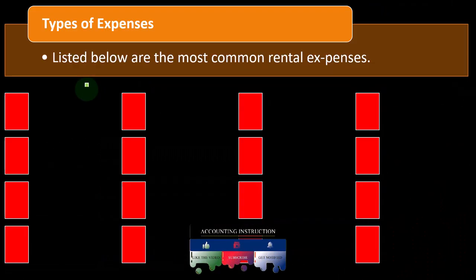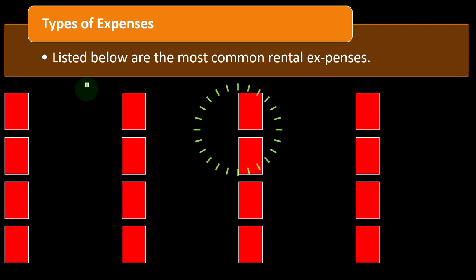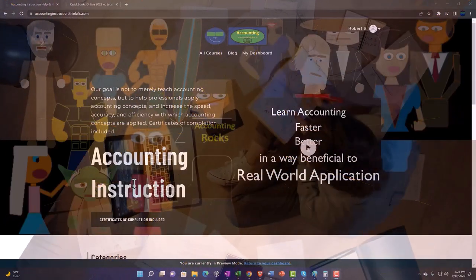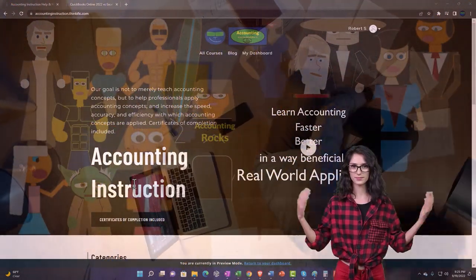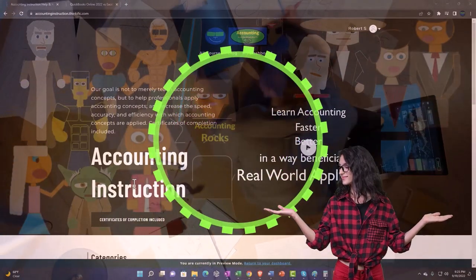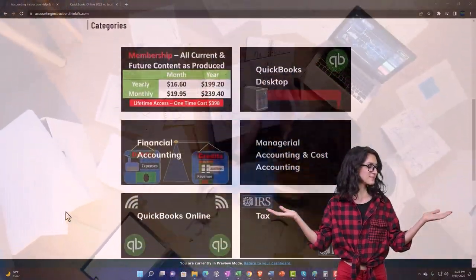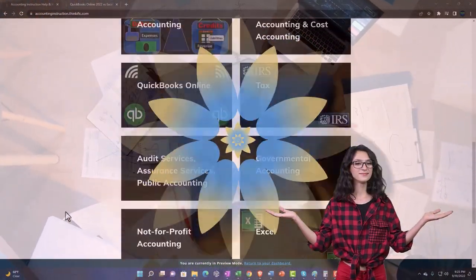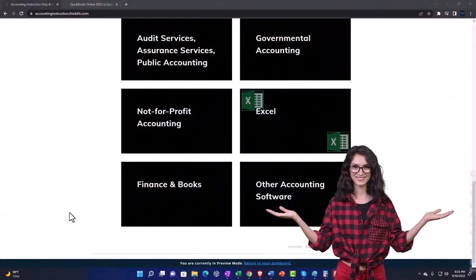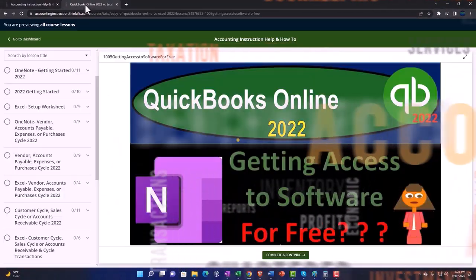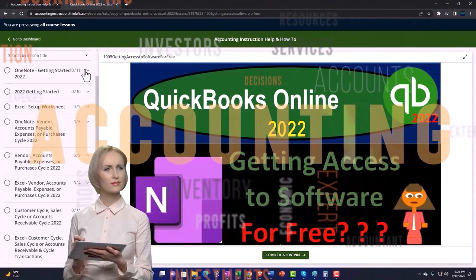In a prior presentation, we started talking about the situation which is the easiest, most straightforward, least convoluted situation—where we have rental property that doesn't have personal use related. Support accounting instruction by clicking the link below, giving you a free month membership to all of the content on our website, broken out by category, further broken out by course, each course organized in a logical, reasonable fashion.